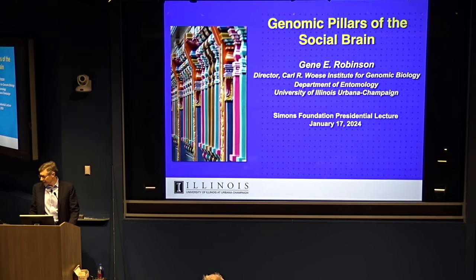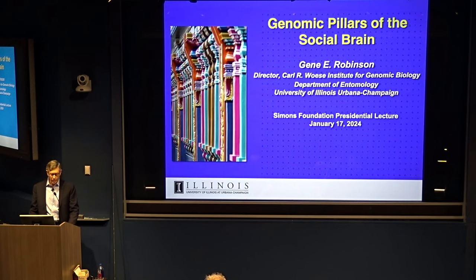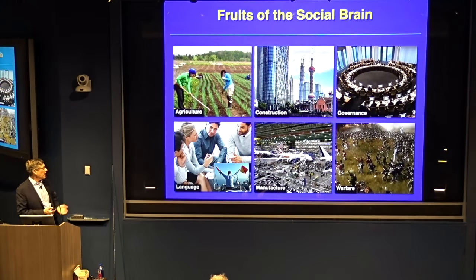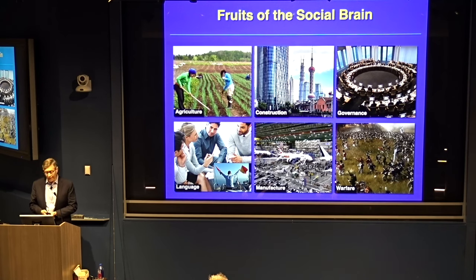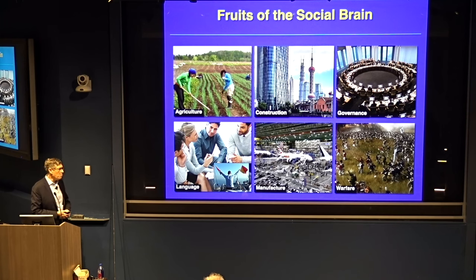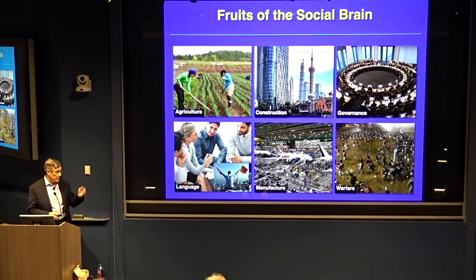David and Alyssa, thank you very much. I'm honored to be here. And I also want to give a shout out to Perry for all the great arranging that was done for this visit. So we're going to talk about the pillars of the social brain, motivated by some highlights — fruits of the social brain: agriculture, construction, language, manufacture, warfare, and governance, really underlying most of those abilities, forms of social organization that make these traits possible.